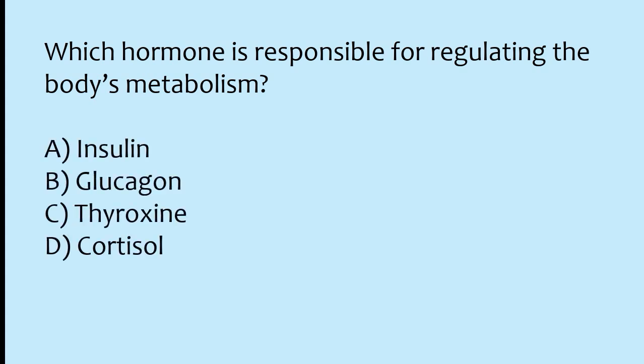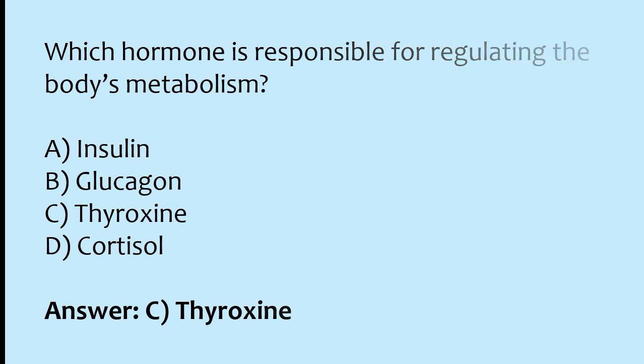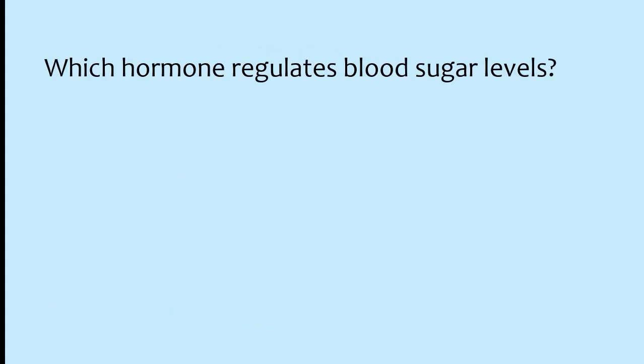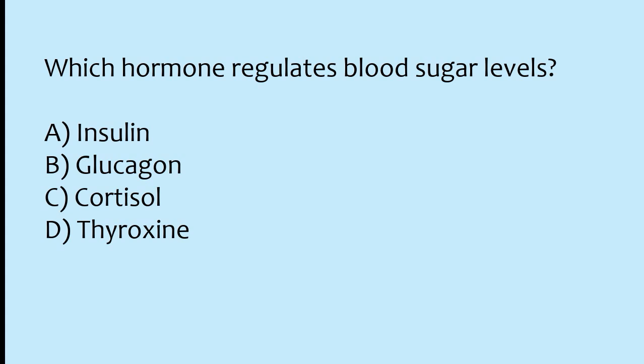Which hormone is responsible for regulating the body's metabolism? Options: insulin, glucagon, thyroxine, cortisol. The correct answer is option C: thyroxine hormone is responsible for regulating the body's metabolism. Which hormone regulates blood sugar levels? Options: insulin, glucagon, cortisol, thyroxine. The correct answer is option A: insulin hormone regulates blood sugar levels.